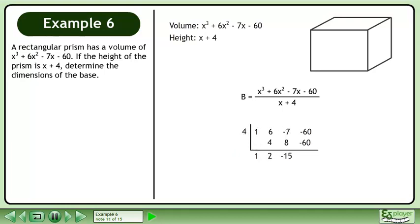Negative 15 times 4 equals negative 60. Negative 60 minus negative 60 equals 0.